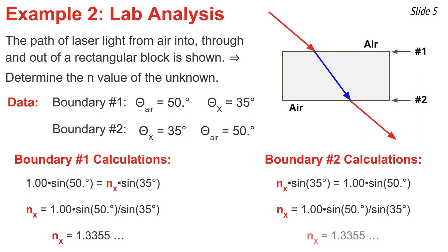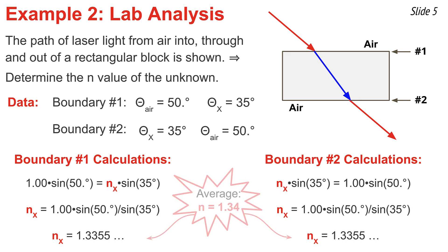Because of measurement error, you may get different values for that second boundary, so it's important to perform that second calculation. When I substitute in the same numbers, the algebra looks the same and the final result is still 1.3355. If you have different numbers, take the two values and average them by adding them together and dividing by two. I'm going to round to the second decimal place — it's about 1.34.